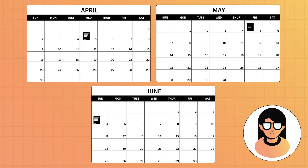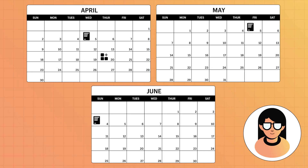Let's say Priya downloads an app that has a recurring monthly charge on April 20th. This charge will show up on the invoice Priya receives on May 5th. 30 days later, she'll be charged again on May 20th, and that charge will show up on Priya's invoice for June 4th.